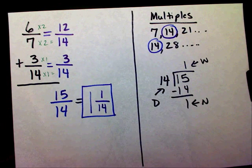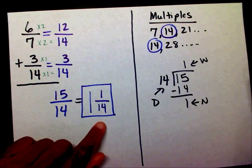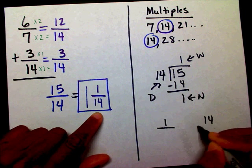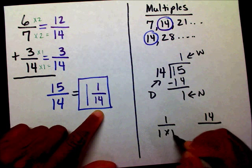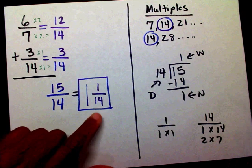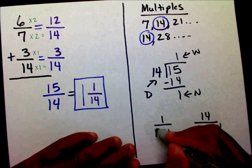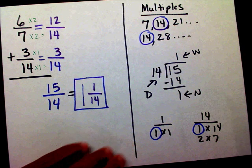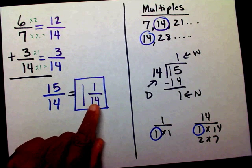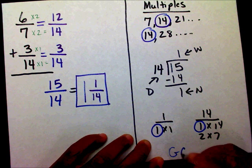How do I know that 1/14 is in lowest terms? If I list the factors for 1 and 14 — I get 1 times 1, and 1 times 14, and 2 times 7 — the only factor that 1 and 14 share is 1. So the greatest common factor is 1, which means this fraction is already in lowest terms.